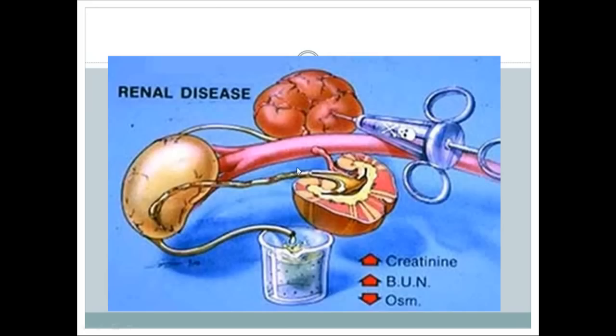This cartoon shows that if a nephrotoxic drug is injected into a patient's blood, it damages the kidneys — especially the tubules of the nephrons, which are the most susceptible part. This leads to acute tubular necrosis (ATN). Common causes include aminoglycoside antibiotics, contrast agents used in radiology, and heavy metals like lead. ATN is the most common cause of intrinsic acute renal failure.